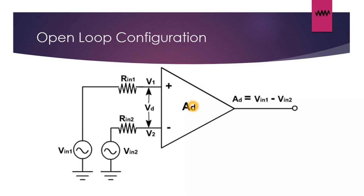So basically the op-amp acts as a comparator in open loop configuration. We will see more of this later.